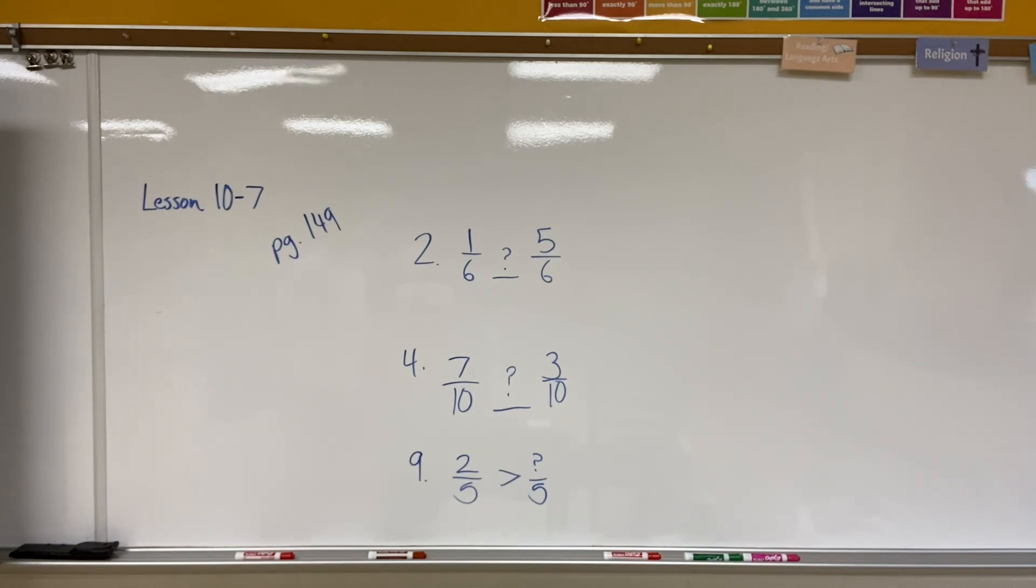And then for number nine. Number nine says write a numerator to complete the comparison. The sentence says two-fifths is greater than blank-fifths. If you have any questions on comparing fractions using the same denominator, please let me know when you come to class tomorrow.